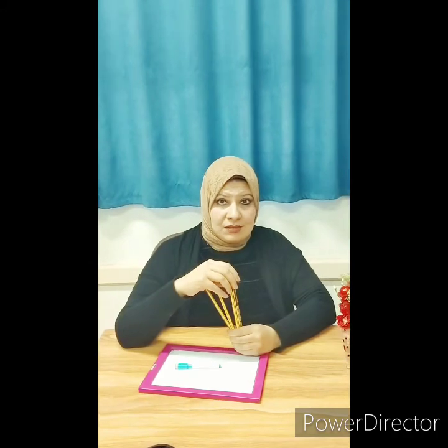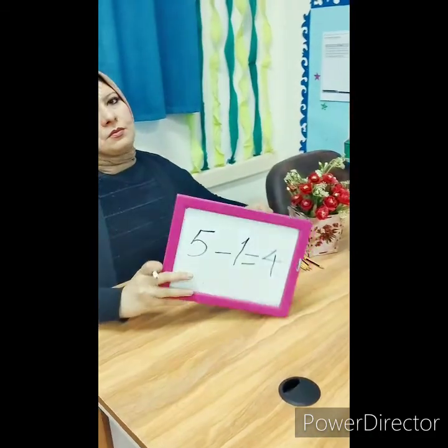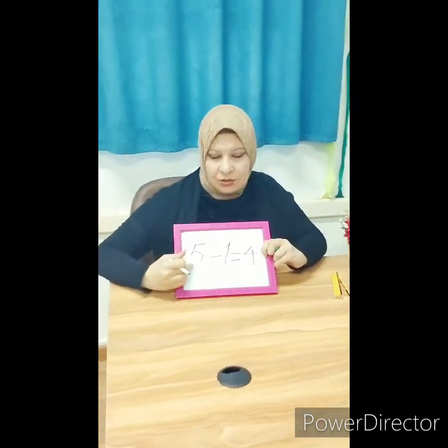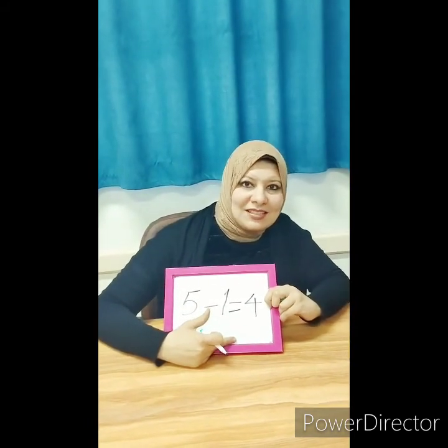How many pencils are left? Let's count. One, two, three, four. Let's try the number sentence. How many pencils did I have? Five. And my sister took how many? One. How many pencils are left? Four. This is the number sentence: five minus one equals four.